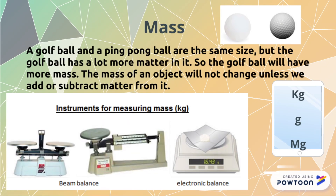We are going to dive more in depth on our vocabulary terms. A golf ball and a ping pong ball are the same size, but the golf ball has a lot more matter in it. So the golf ball will have more mass. The mass of an object will not change unless we add or subtract matter from it. Here are some instruments that are used for measuring mass. We have a balance and an electronic balance.